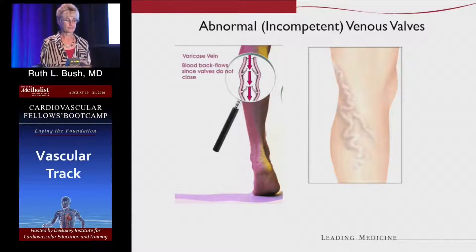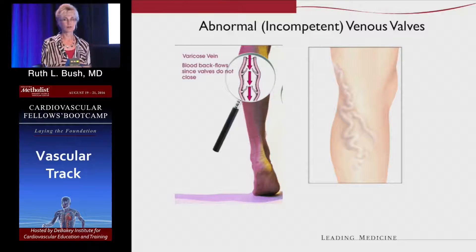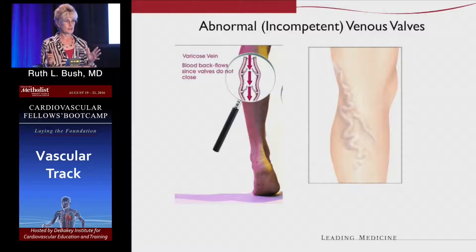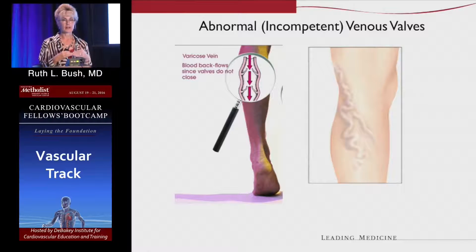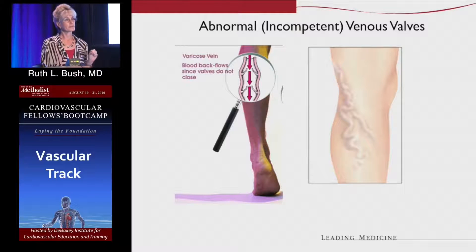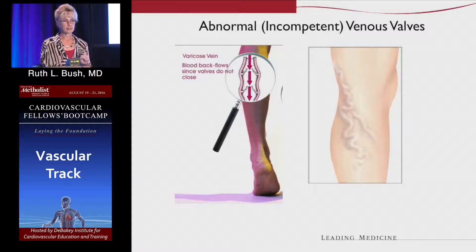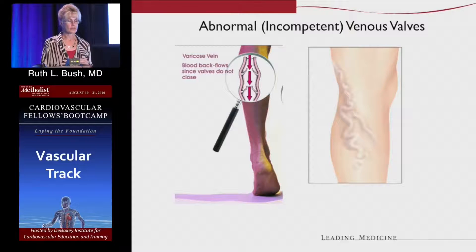Veins have valves to keep the blood going toward your heart and keep it from backing down between heartbeats. The valves will become disrupted as venous hypertension approaches a valve — it'll stretch those valves out and the leaflets will not come together. Venous valves are about the consistency of wet tissue paper, so they're very fine. Any damage — from a deep venous thrombosis or superficial venous thrombosis — can cause those valves to become damaged, thickened, and foreshortened very easily.